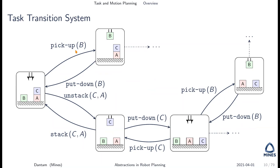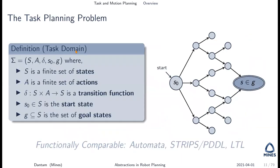We can define a task planning problem with a finite set of states, finite set of actions, a transition function, a start state, and a set of goal states to reach. There are different ways to represent this — you could think of it as a finite automaton. STRIPS and PDDL are the de facto standard for defining planning domains, and many in robotics use temporal logics like linear temporal logic for defining discrete systems. Fundamentally it's the same: discrete symbolic state and transitions between discrete states.